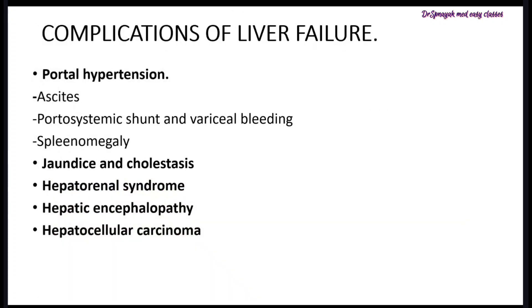Complications of liver disease include portal hypertension with subtypes like ascites — meaning abnormal buildup of fluid in the abdomen — portosystemic shunt and variceal bleeding, which means bleeding of varices throughout the GI tract such as the esophagus, stomach, and rectum. Additional complications include splenomegaly, jaundice, cholestasis, hepatorenal syndrome, hepatic encephalopathy, and hepatocellular carcinoma.